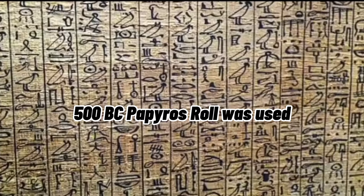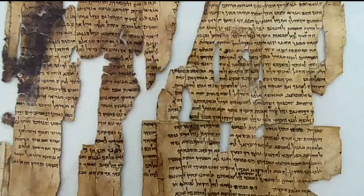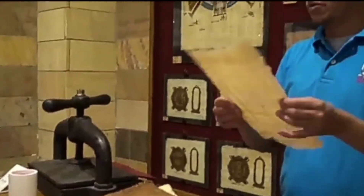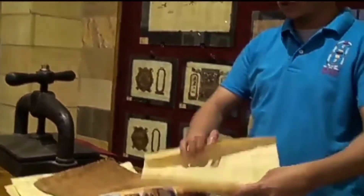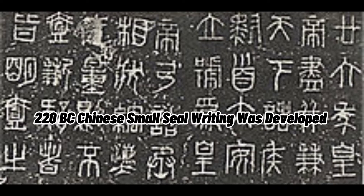500 BC: Papyrus was used. Ancient Egyptians used the stem of the papyrus plant to make seals, clothes, mats, and cords. 220 BC: Chinese small-scale writing was developed. It is an archaic form of Chinese calligraphy.